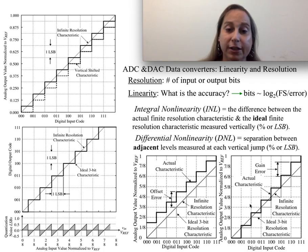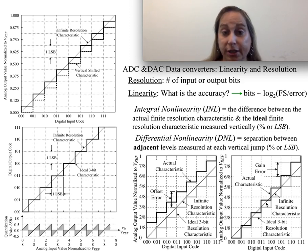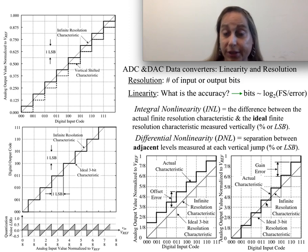A different kind of error is when the actual characteristic has a steeper slope than ideal — this is called a gain error. The LSB size is effectively changing, and you'll see this show up in both the INL and DNL curves. In particular, the INL will continue to increase with code.